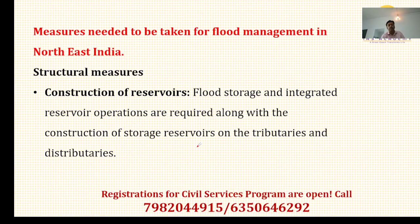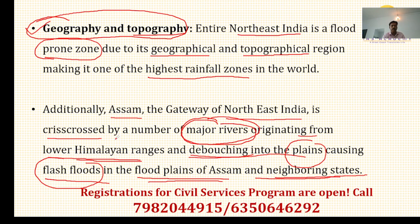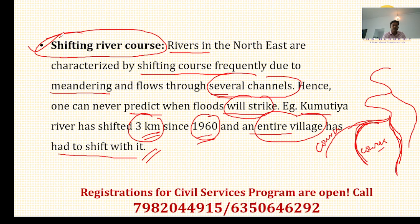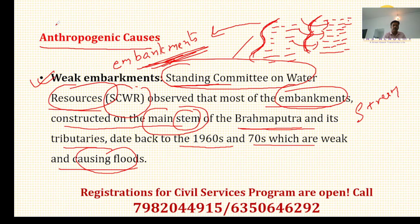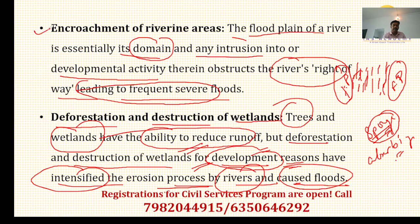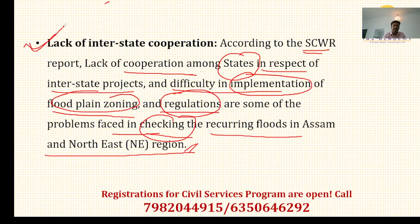In summary, the causes of flooding in Northeast India are: first, geography and topography; second, shifting course of rivers; third, high silt and braided channels. The anthropogenic causes are: weak embankments; encroachment of riverine areas; deforestation and destruction of wetlands; climate change; and lack of interstate cooperation.